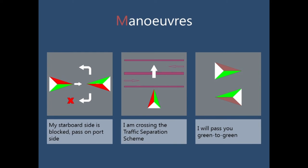Maneuvering pictograms. In the first pictogram you can see a vessel intending to inform the other that the starboard side is blocked and that the other vessel must pass on the port side. This is indicated through a cross on the starboard side of a vessel. In the second pictogram you can see a vessel intending to inform other vessels in its vicinity that it is trying to cross the traffic separation scheme. And in the last pictogram you can see a green-to-green pictogram, which is just an indication that the vessel is going to pass you on the starboard side.